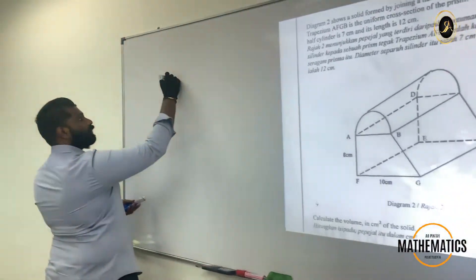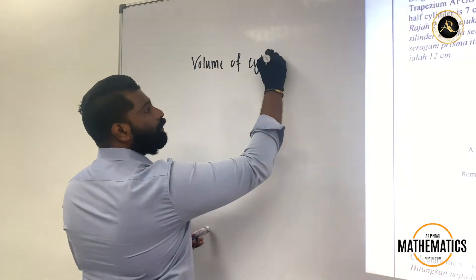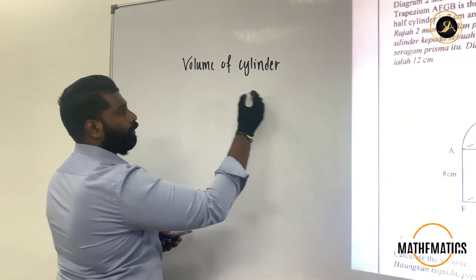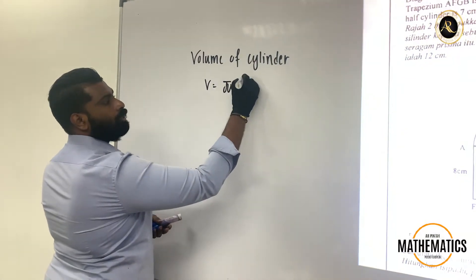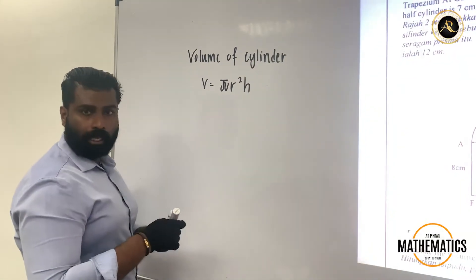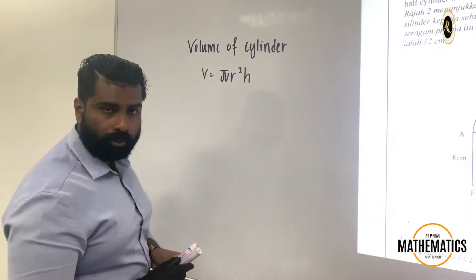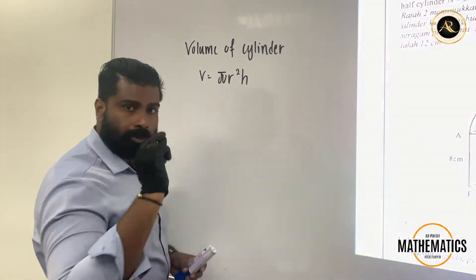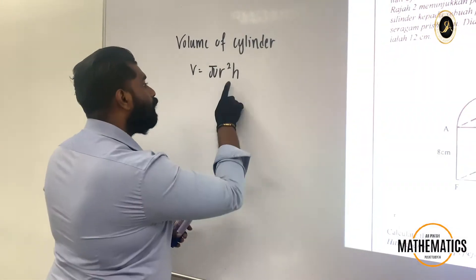First you must know how to find the volume of a cylinder. The formula for volume of cylinder will be pi r square h. The pi will be representing 22 over 7 or 3.142. The r is representing radius.